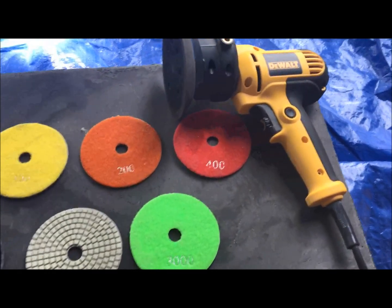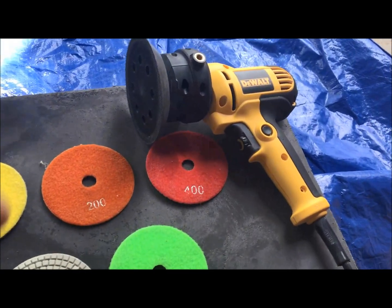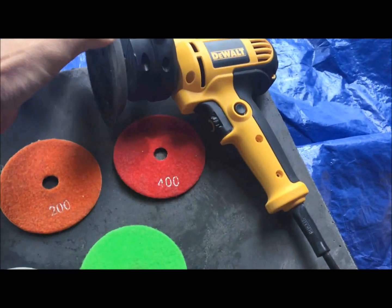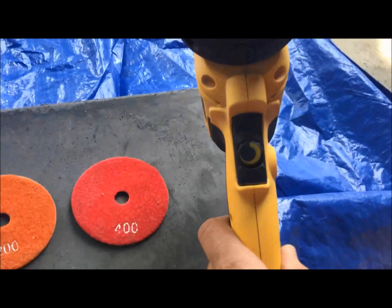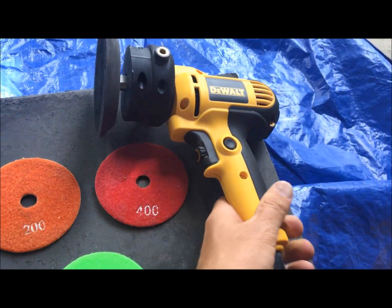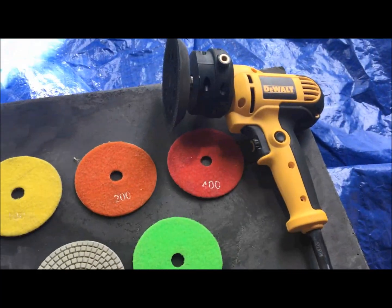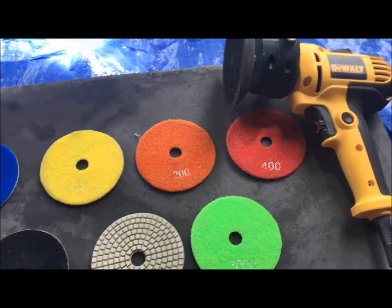So first things first, we have our DeWalt orbital sander. This is basically just an orbital sander that spins around and it's a variable speed sander, so you can change how fast this thing spins around. That's what makes all the motion to remove the material with these pads.